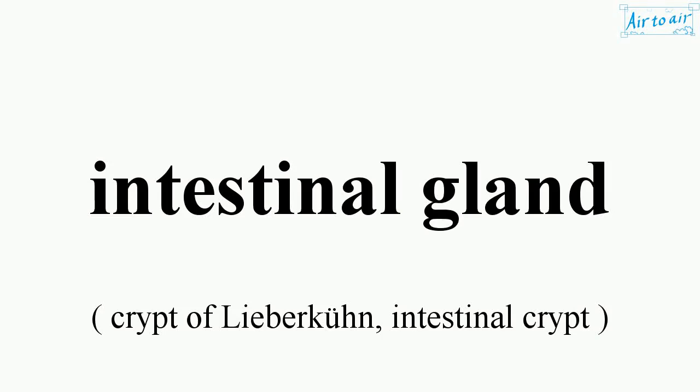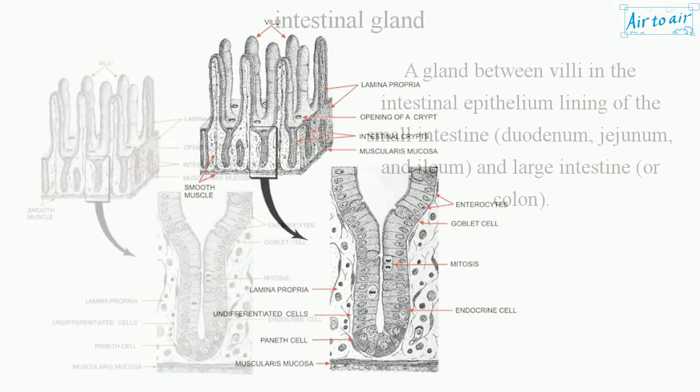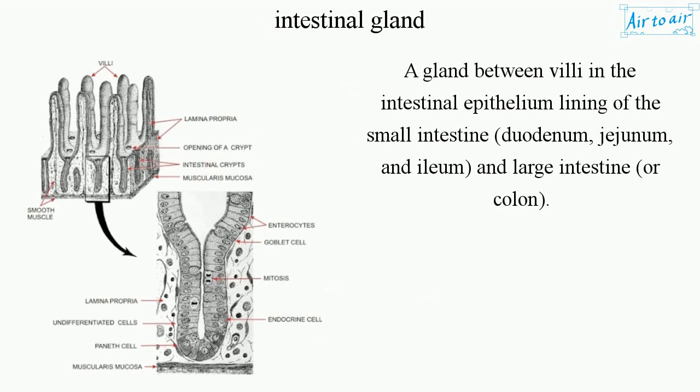Intestinal gland: a gland between villi in the intestinal epithelium lining of the small intestine — duodenum, jejunum, and ileum — and large intestine, or colon.